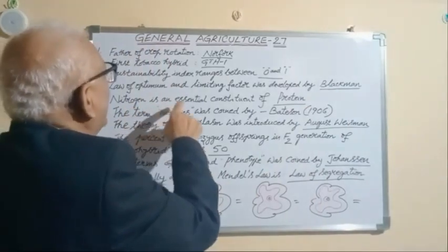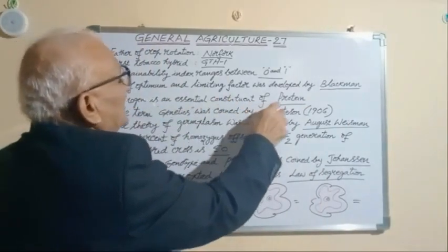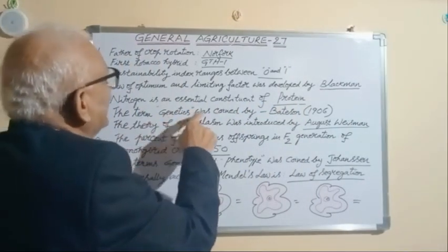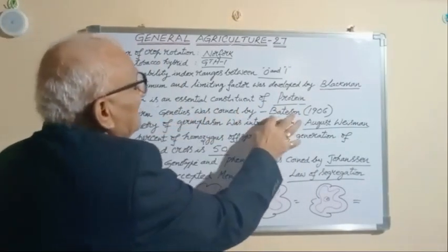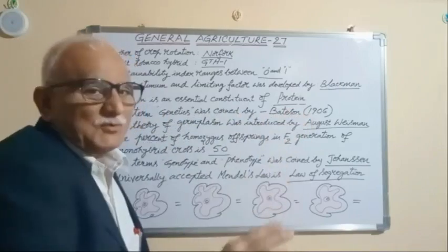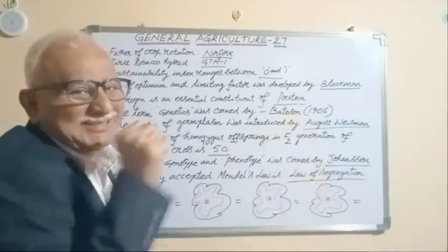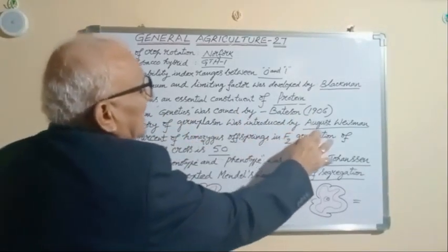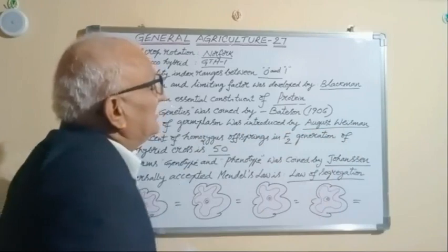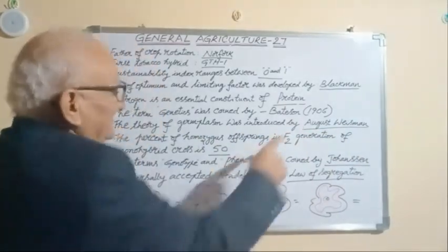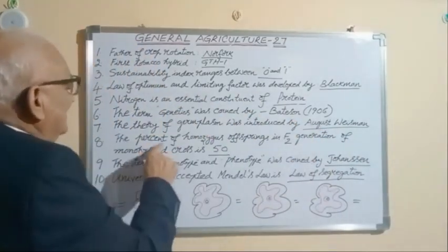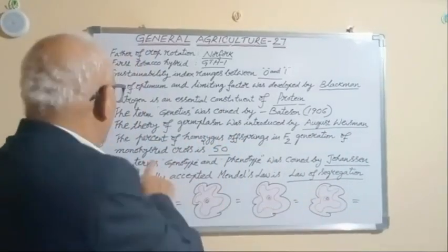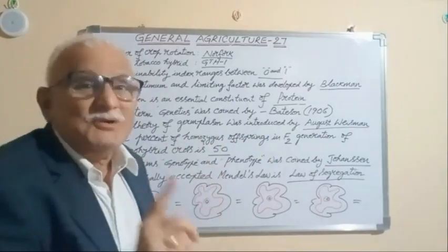Nitrogen is an essential constituent of protein. The term Genetics was coined by Bateson in 1906. The theory of germplasm was introduced by August Weismann. The percent of homozygous plants in the F2 generation of a monohybrid cross is 50.